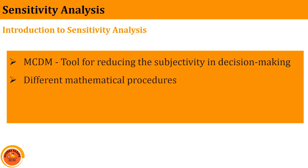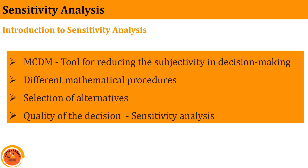Different MCDM methods have different mathematical procedures, which makes the same problem yield different solutions. The selection of alternatives depends upon the MCDM method the researcher applies. The quality assessment of the decision method is called sensitivity analysis, and there is no proper consensus on it. There are various ways to perform this assessment — for example, in multi-objective programming or linear programming — but here I am focusing especially on discrete MCDM methods.